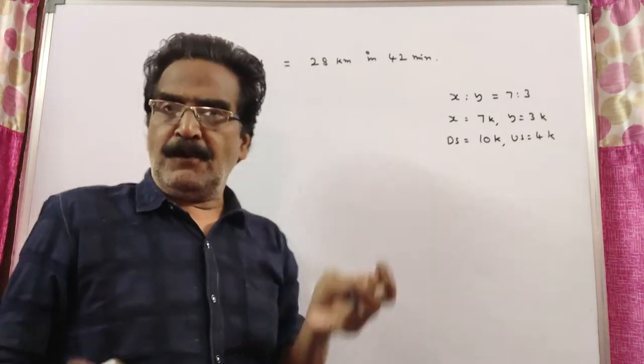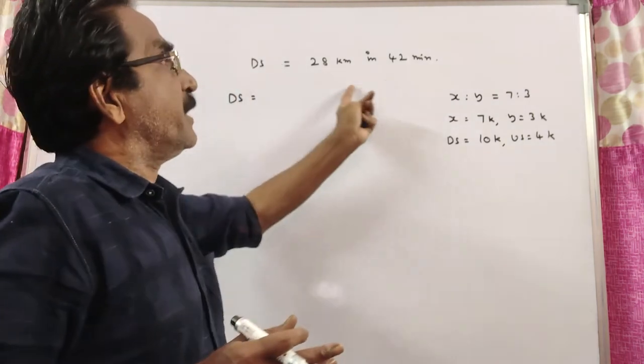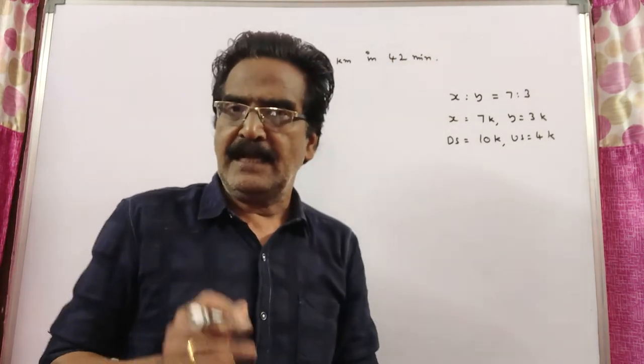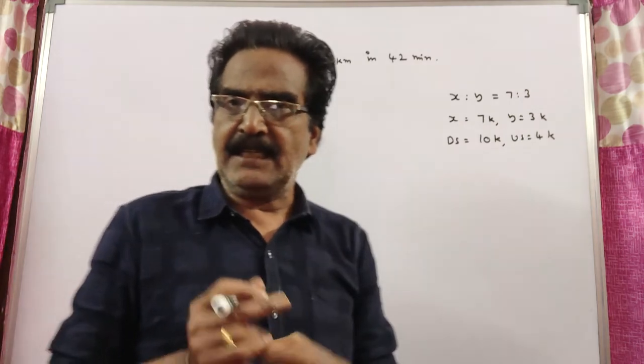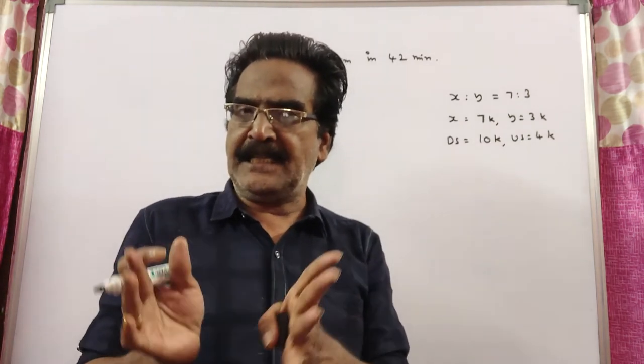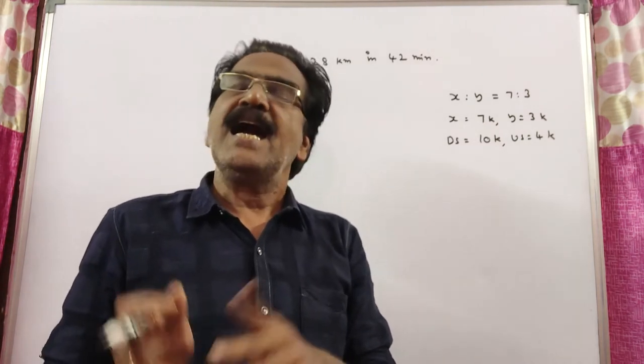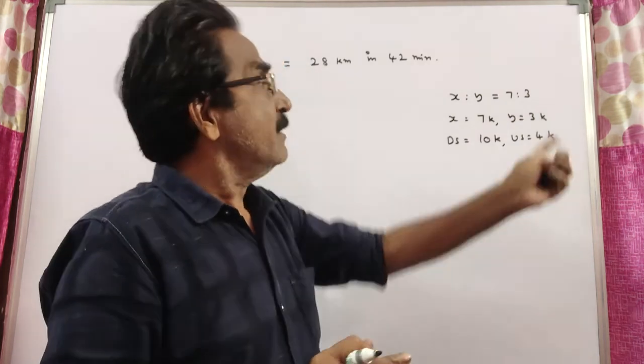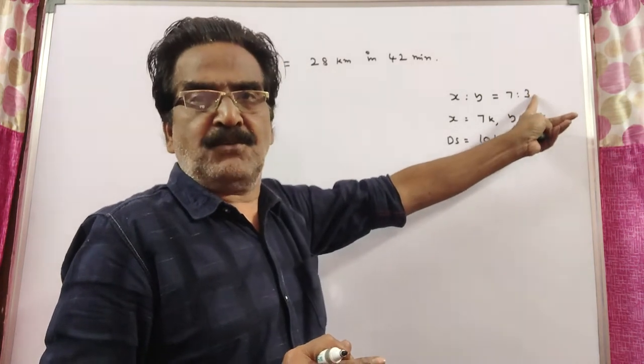A boat travels 28 kilometers downstream in 42 minutes. And it is also given that the ratio between the speed of the boat in still water and the stream velocity is 7 to 3.